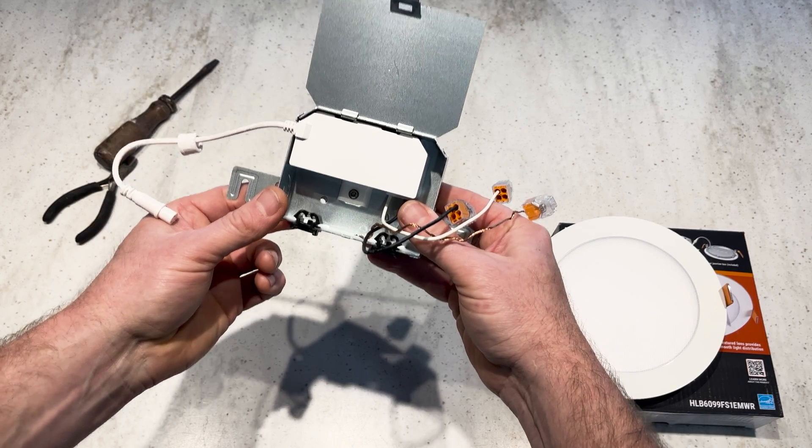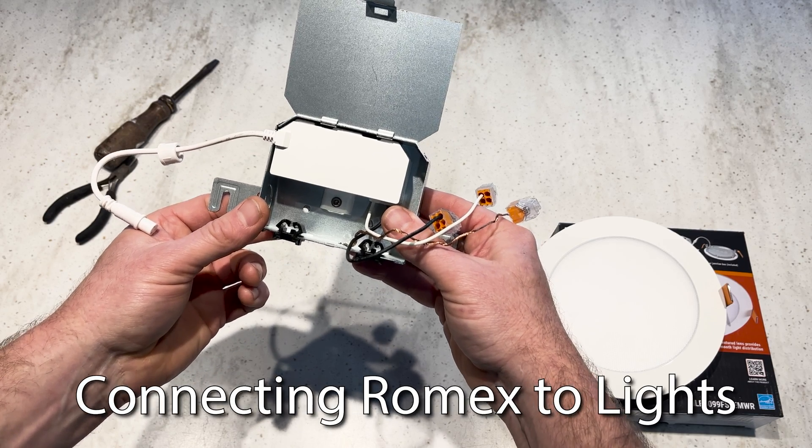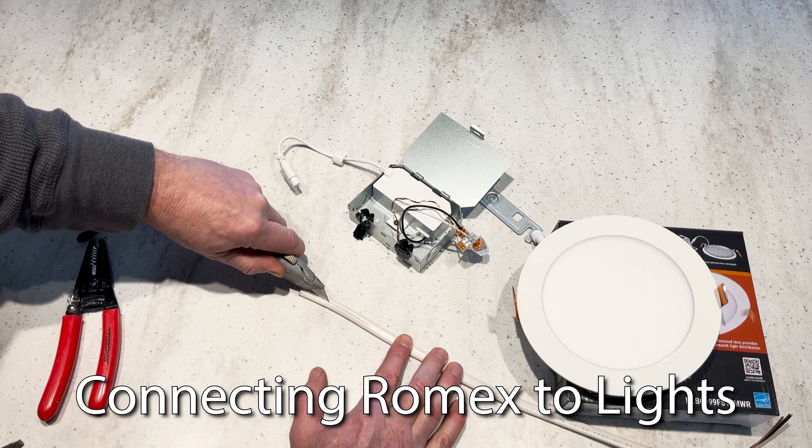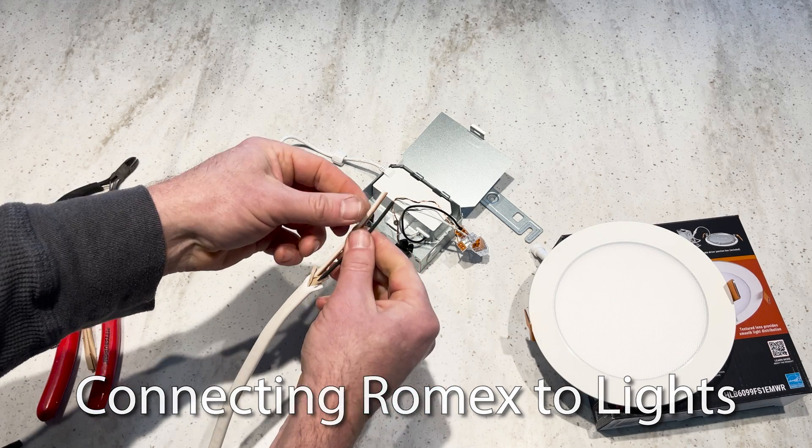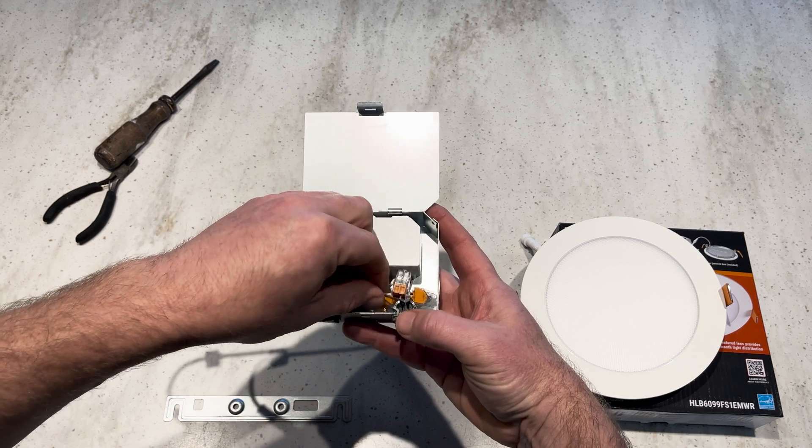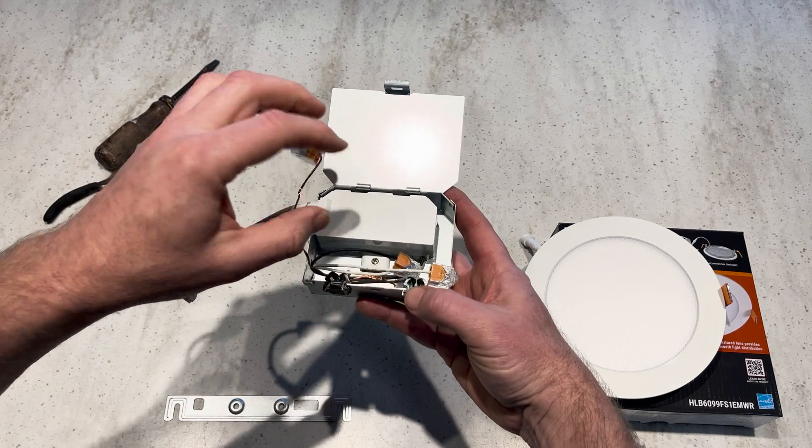Finally, it's time to connect my Romex to my lights. This is a canless six inch light by Halo and it's pretty slick. I strip a few inches of the protective outer jacket off of the Romex to expose the black, white, and ground wires and pop open the junction box to connect them to wires of the same color coming from the light.